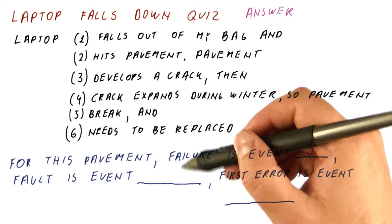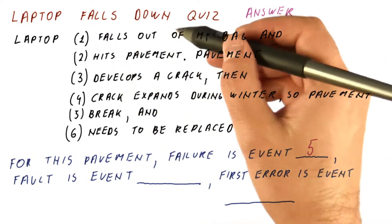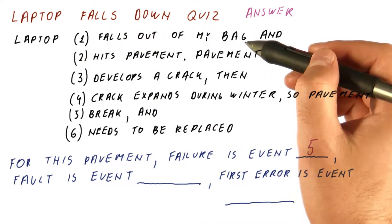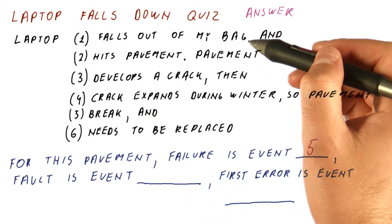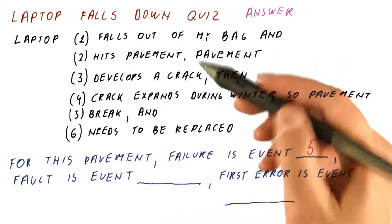What's the fault? It's the event that resulted in the first error. In this case, it's not that the laptop fell out of the bag. It had nothing to do with the pavement. It is that the laptop hit the pavement.